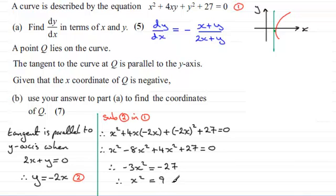So if x squared equals 9 then obviously x could be equal to plus or minus 3. So let's just put here x could equal plus or minus 3, but we're told that the x coordinate of Q is negative so we'll just put then x equals minus 3 as x must be less than zero.